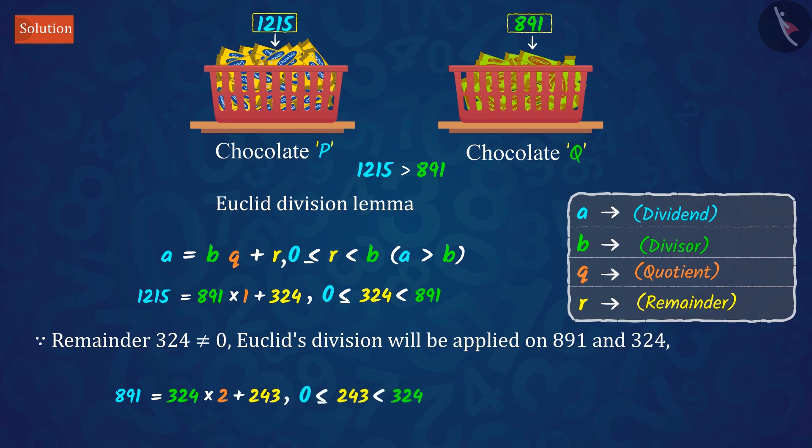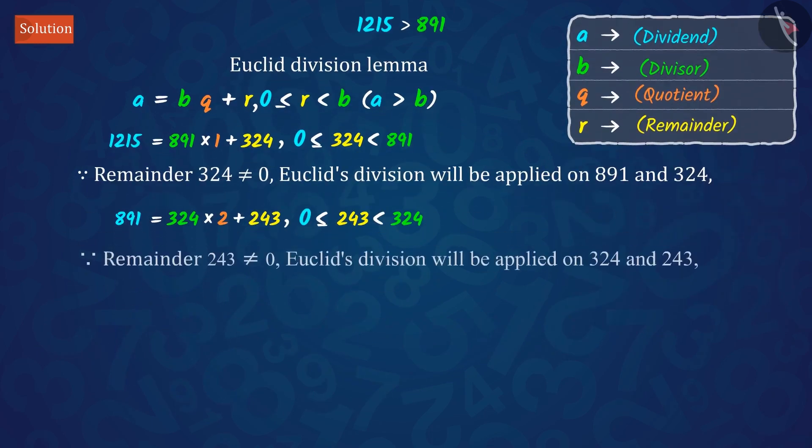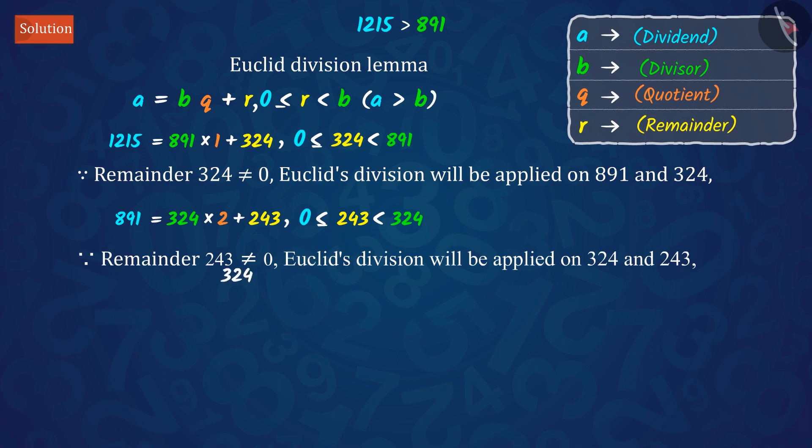And by this, we get this value. Here also, the remainder is not equal to 0, so we apply Euclid's division lemma once again.